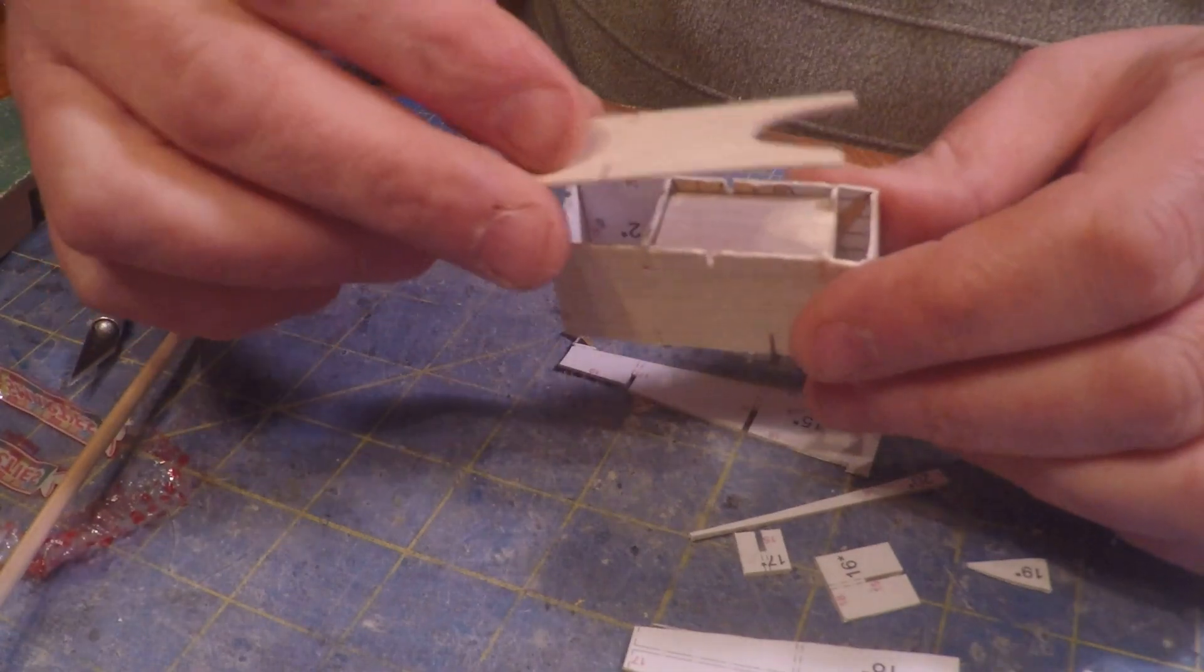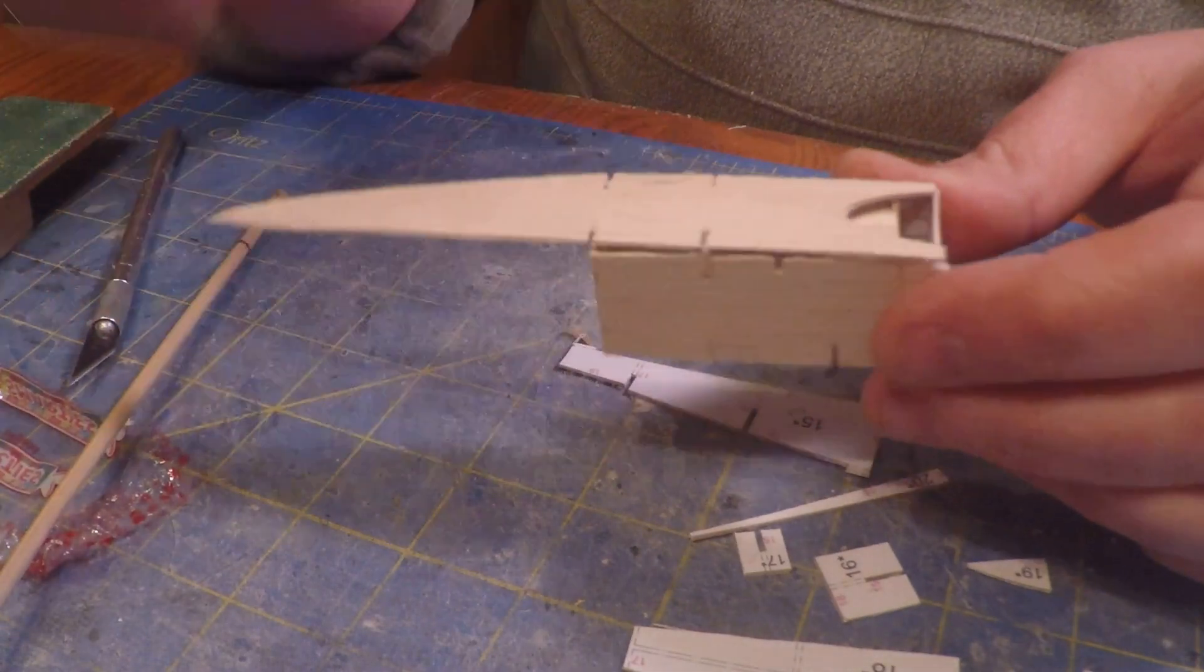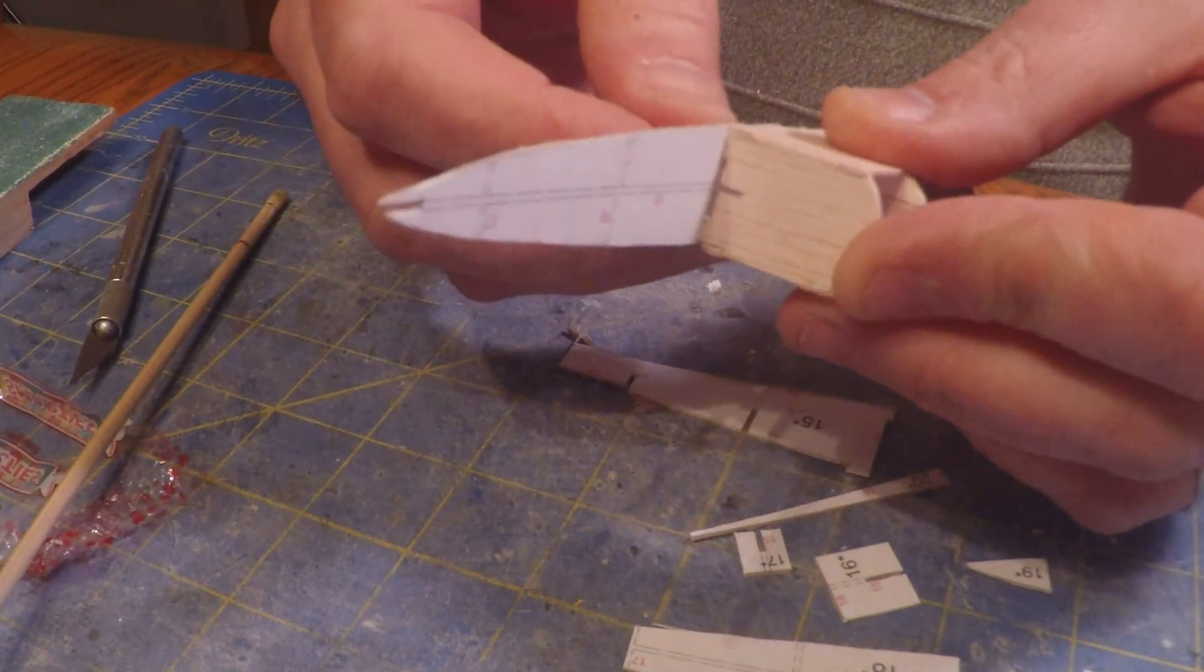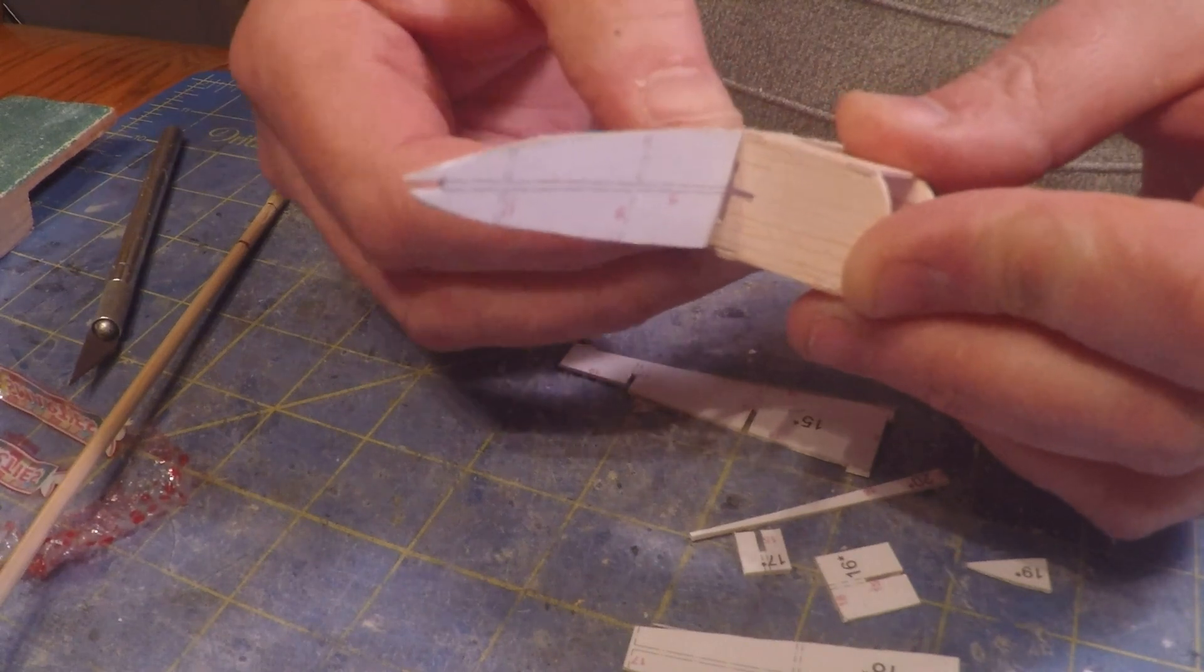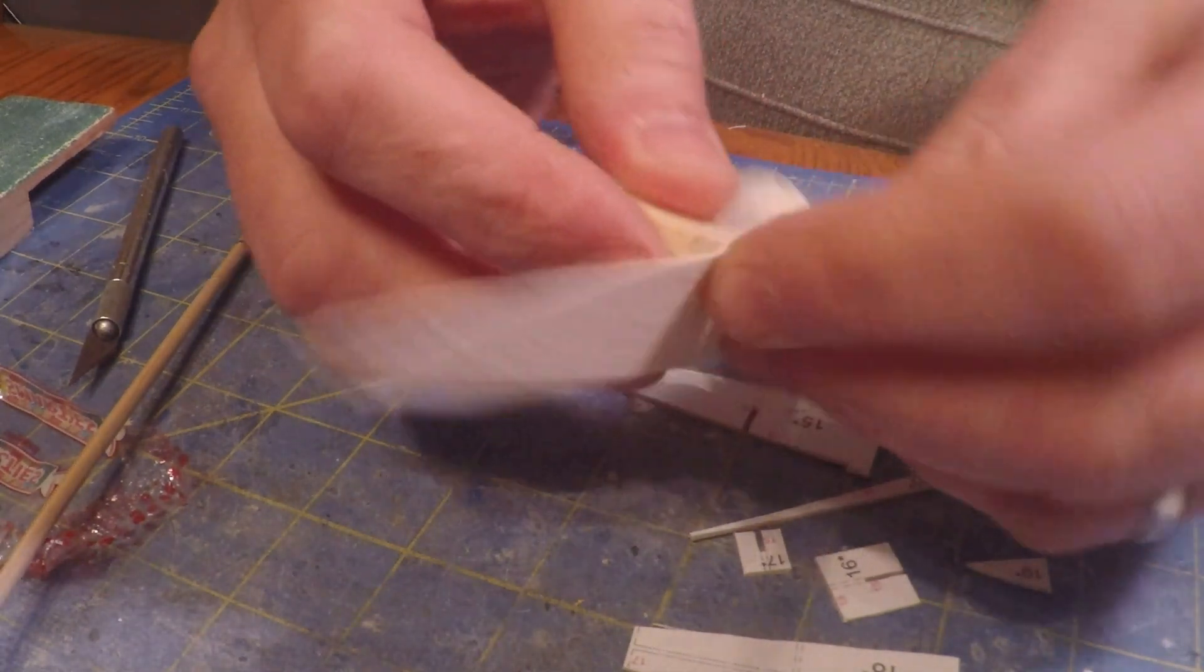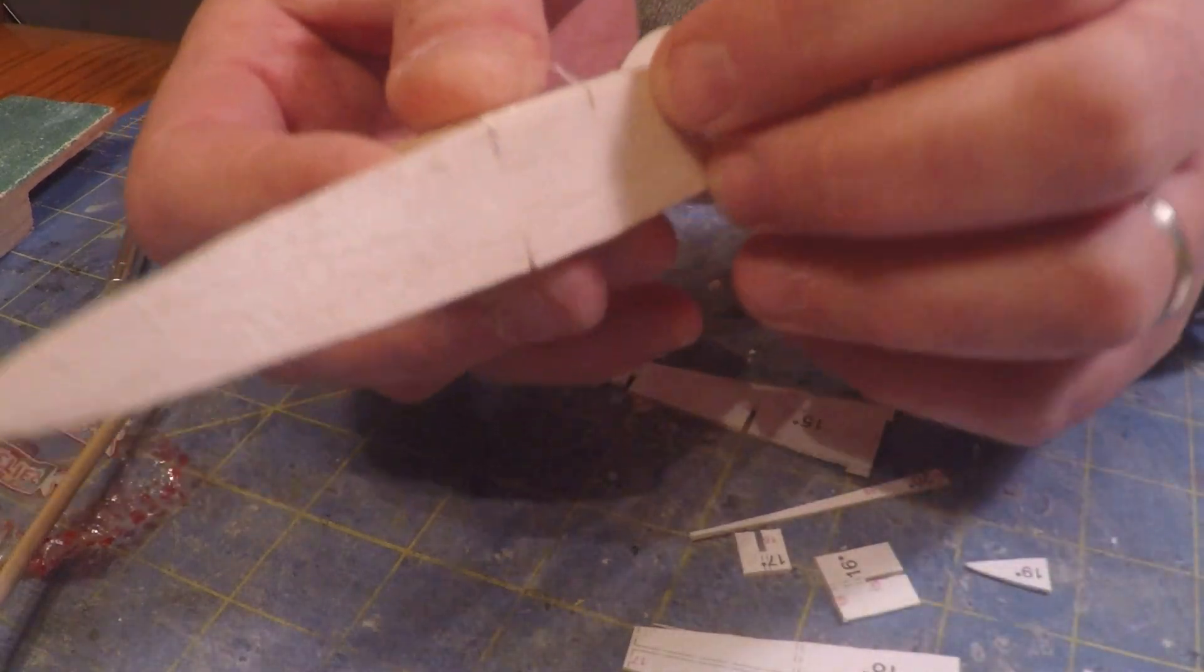It basically snaps into place, just like we were talking about the last time. You can see the pieces, the little ears going in where they're supposed to. And everything is straight and true, meaning once you snap those in, the whole thing is perpendicular where it's supposed to be and straight.